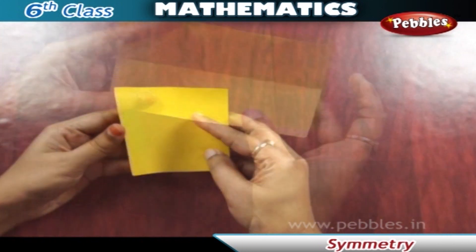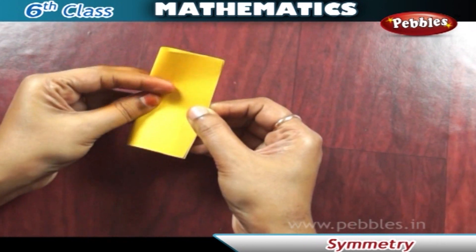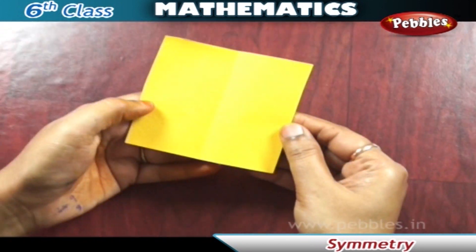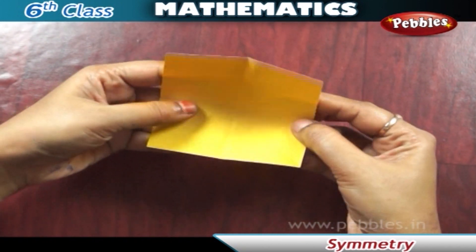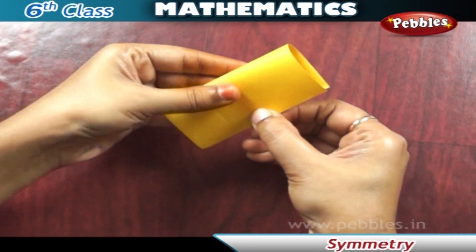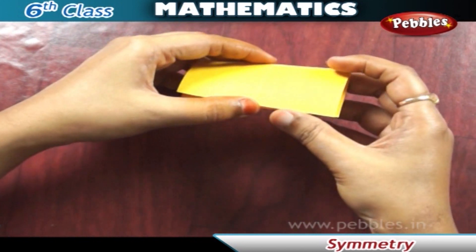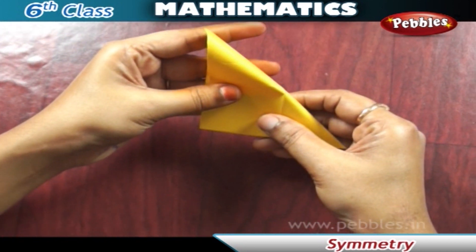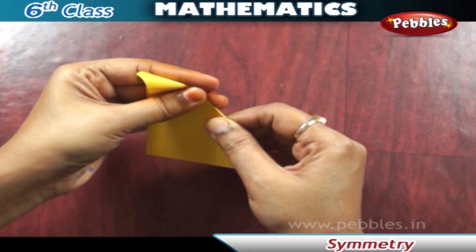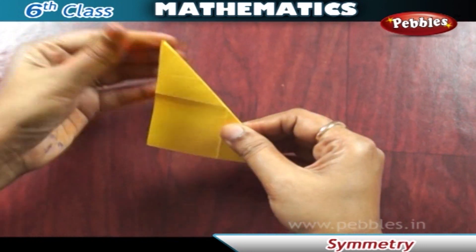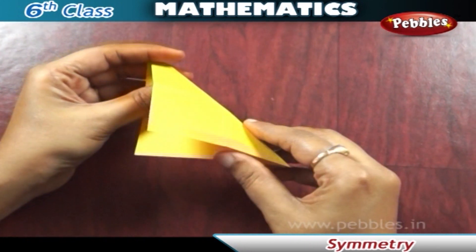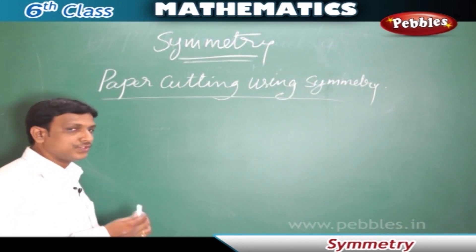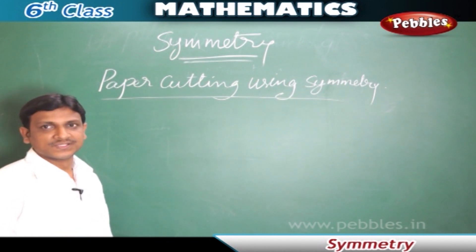Now take a square piece of paper. Fold it into half vertically so that the edges coincide. Open the fold and you will find that the two halves made by the fold are congruent. The fold at the center becomes a line of symmetry for the paper. Try to fold the paper at different angles so that it becomes a line of symmetry. There are four lines of symmetry for a square paper.